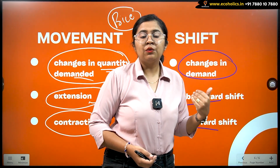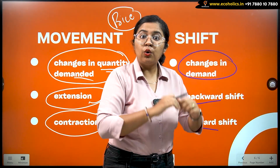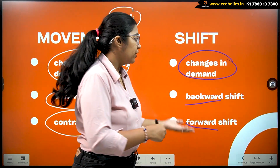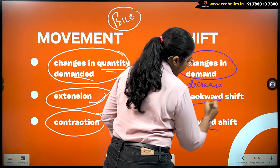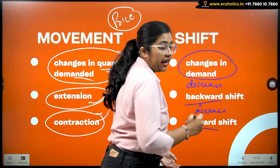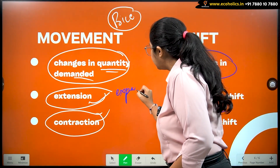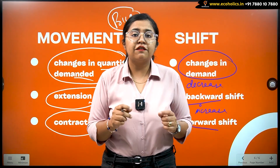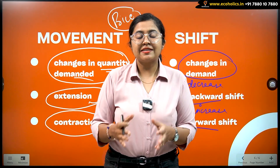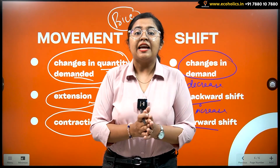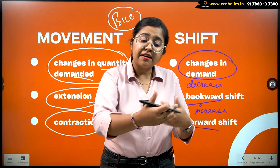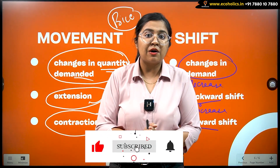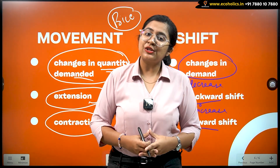When the whole demand curve shifts towards a certain position, that is related to different factors other than the price of that commodity. There is a backward shift and a forward shift. The backward shift happens when other factors contribute to a reduction in the whole demand, and the forward shift happens when other factors contribute to an increase in the demand. Here you can also use the words decrease and increase, or expansion and contraction. This was it for today — we will have more such informative lessons in microeconomics very soon. Till then, stay tuned to Echoholics. Bye-bye.